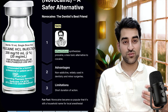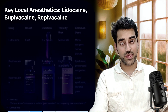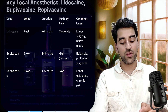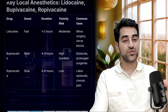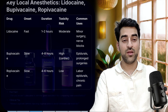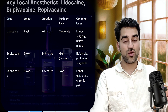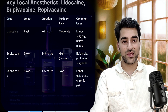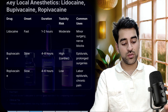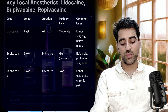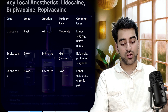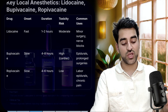Lidocaine has a faster onset, a duration of one to two hours, and moderate toxicity. In large doses its toxic effects can include arrhythmia, shock, and seizures. Common uses include minor surgery and nerve blocks. Bupivacaine has a slow onset, a duration of four to eight hours, and a high toxicity risk — notably cardiac toxicity. It is used in epidurals and prolonged surgeries.